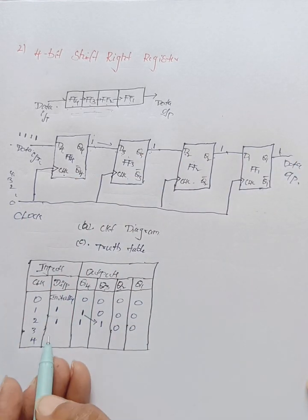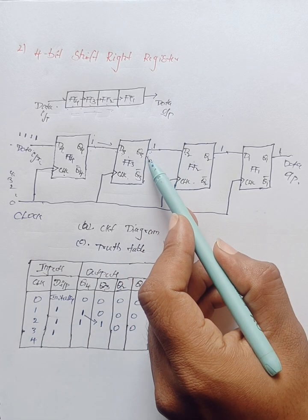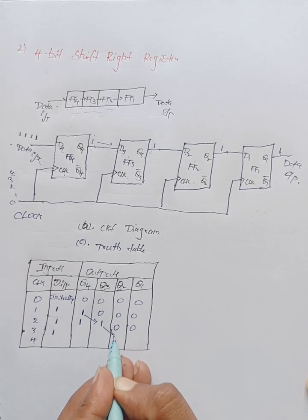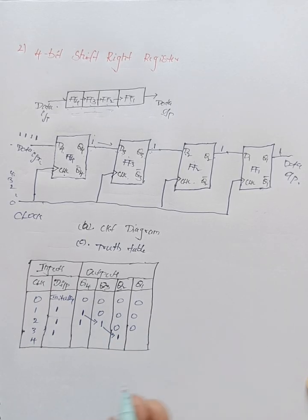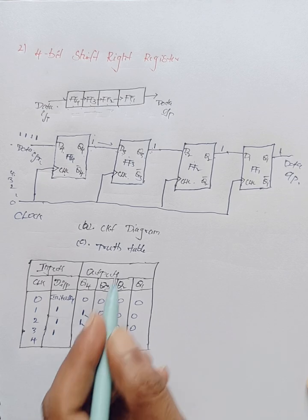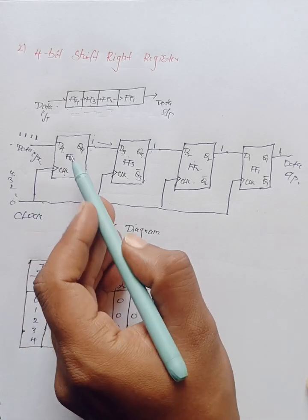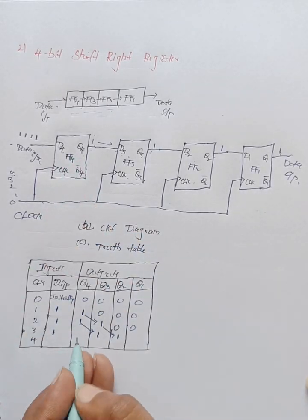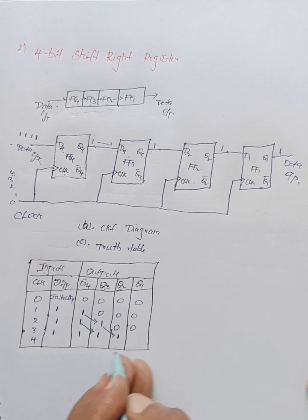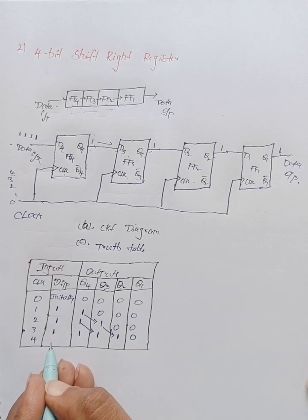Whenever the third clock pulse is applied, Q3 data shifts to Q2, so Q2 becomes one. Q4 data shifts to Q3, so Q3 is one. Fresh data is accepted into D4, so Q4 is one. D1 flip-flop receives zero input, so Q1 maintains its previous state output — zero.